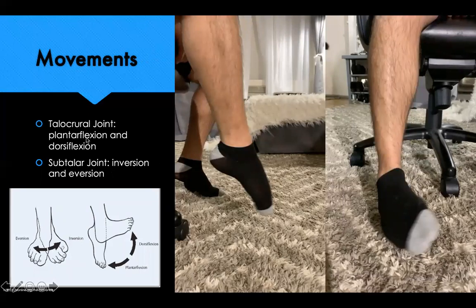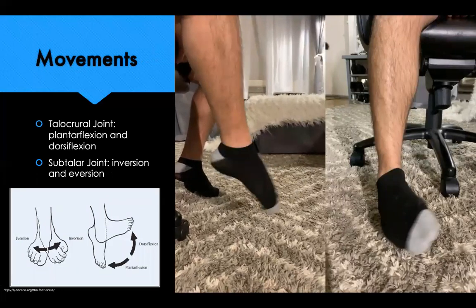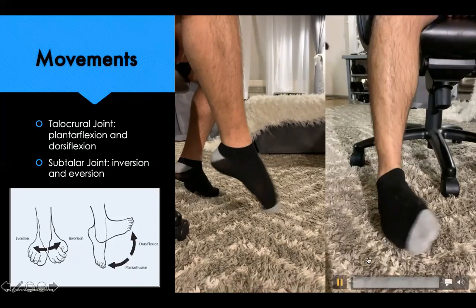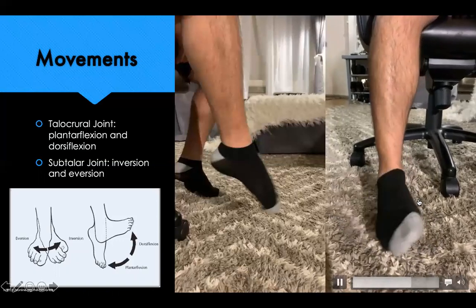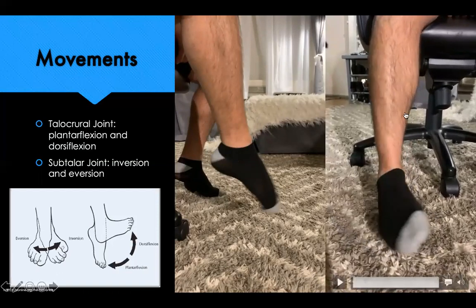Let's take a better look at some of these movements. At the talocrural joint — the true ankle joint — we experience plantar flexion and dorsiflexion. As you can see in the first video, when the foot goes up that is dorsiflexion, and when the foot is pointing down, like doing a calf raise or pressing a gas pedal, that is plantar flexion. In the right-hand video, at the subtalar joint, we see inversion and eversion. Inversion is where the bottom of the foot faces medially, toward the midline of the body. When the foot swings outward so the bottom faces away from the body — laterally — that's eversion.